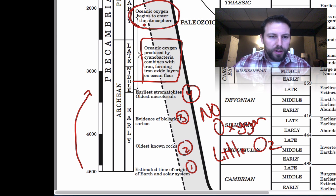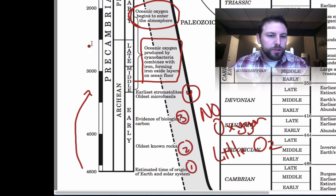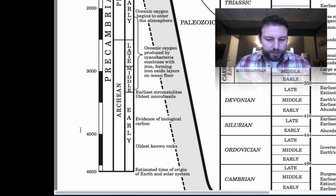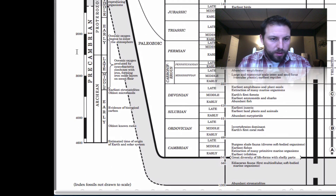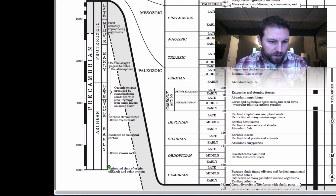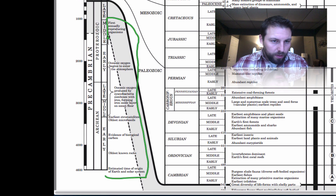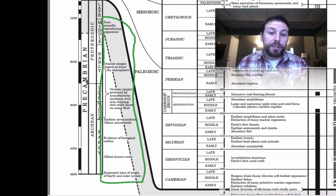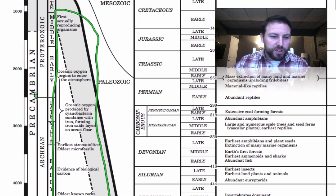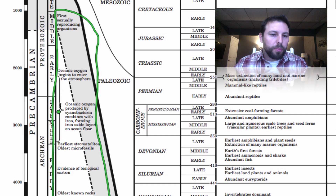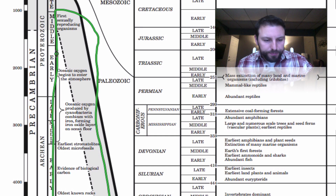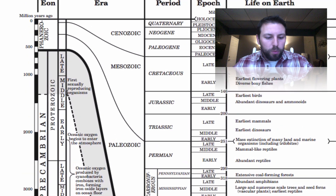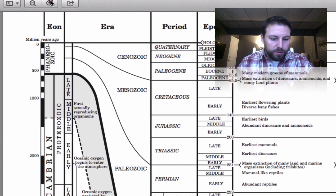Oceanic oxygen begins to enter the atmosphere, but it took from 4.6 billion years ago to about 3 billion years ago — roughly 2 billion years — before any significant O2 was in the atmosphere. All these features in this region are extremely old. All of these events took place in the Pre-Cambrian, which is the oldest of the eons. It's split up into the Archean and Proterozoic, which are broken up based on major events that occurred.